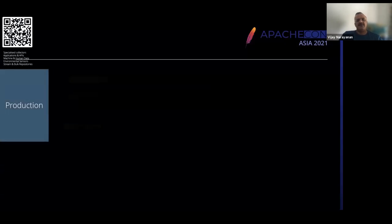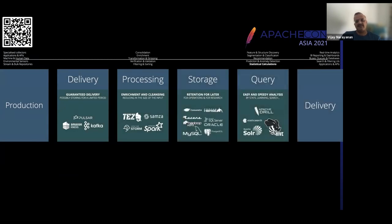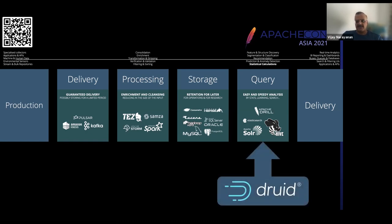Where does Druid fit in the broader data processing pipeline? If you think of the pipeline as something where data is produced at an application, delivered using tools like Amazon Kinesis or Apache Kafka, brought and processed in things like Spark or Hive, then stored in a variety of systems — HDFS, MySQL, HBase, and so on — and finally queried and delivered, the querying layer is where Druid fits in. Querying is all about slicing and dicing the data, doing ad hoc metrics, and using ad hoc statistical calculations.